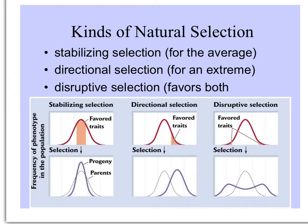Stabilizing selection selects for the average. You can see in the diagram here there's a distribution of traits, and in the middle are the most common — the average. These are favored, so that distribution becomes higher and more pointed. There's selection for those and against the extremes.